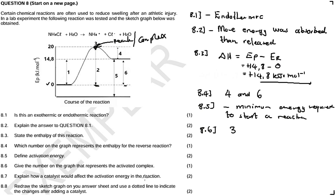8.7: explain how a catalyst would affect the activation energy in the reaction. Some reactions don't start on their own — they need a little bit of a push. For example, a stick of match — you strike it over that part of the box. That's an example of activation energy; you need a little bit of kinetic energy to kick-start the reaction.